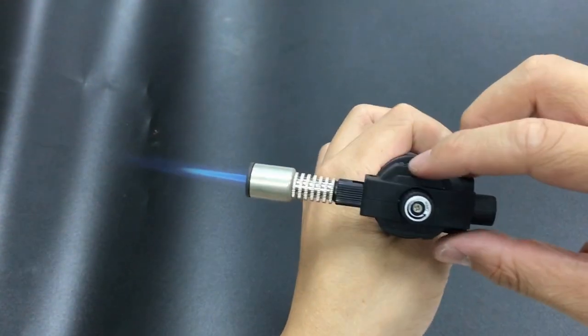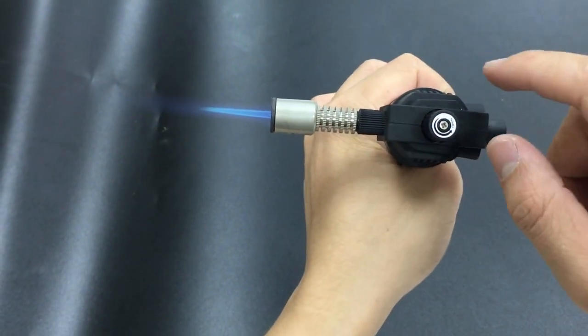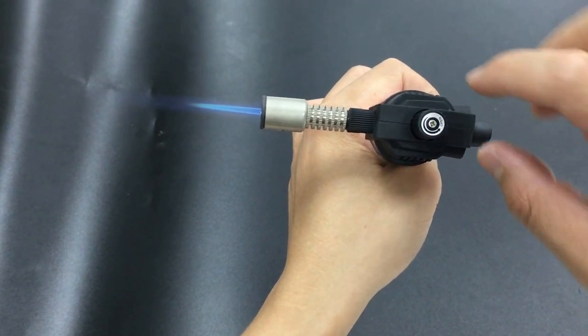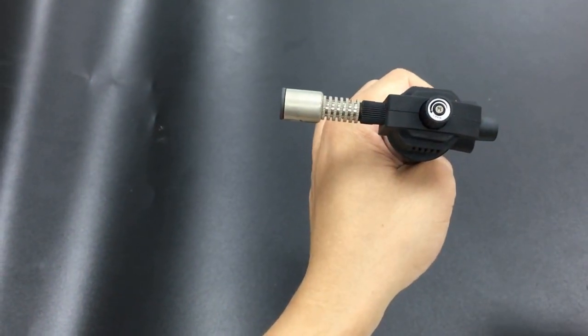To turn it off, just turn the gas valve all the way to the left, which is clockwise all the way down. Then, the gas is off.